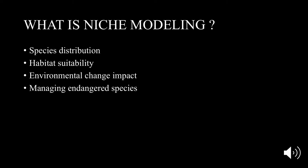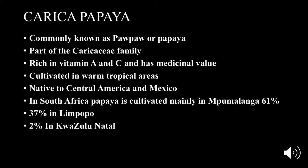In this video the species that we will be mainly focusing on is the Carica papaya. The Carica papaya is commonly known as popa or papaya. This fruit is part of the Caricaceae family, which is a small family of flowering plant species. The fruit is also known to be rich in vitamin A and C and has great medicinal value.